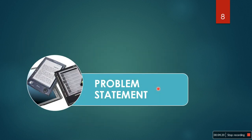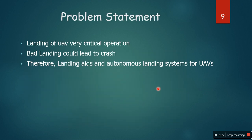Now the problem statement. Landing of a UAV is a very critical operation as it requires precise decisions and robust systems to perform autonomous landing. Bad landing could lead to a crash. Therefore, landing aids and autonomous landing systems for UAVs are proposed, invented, and in use.